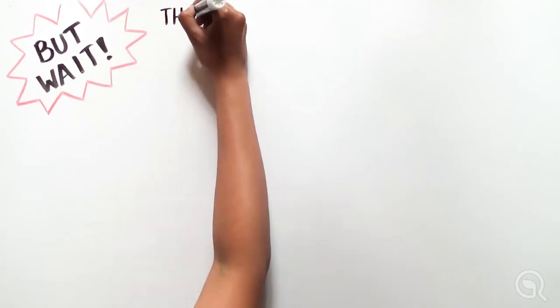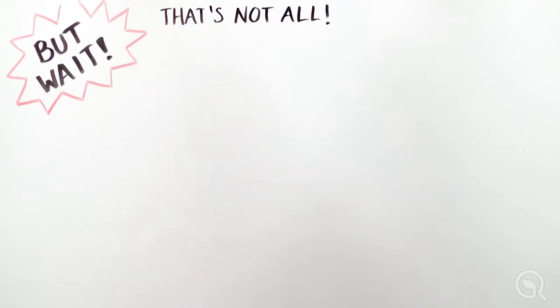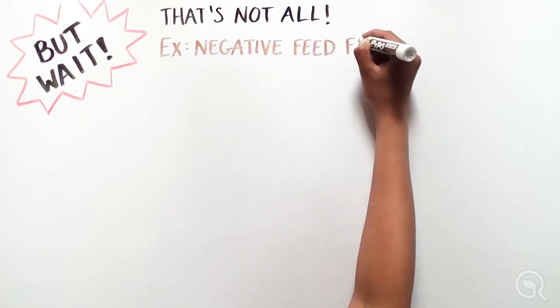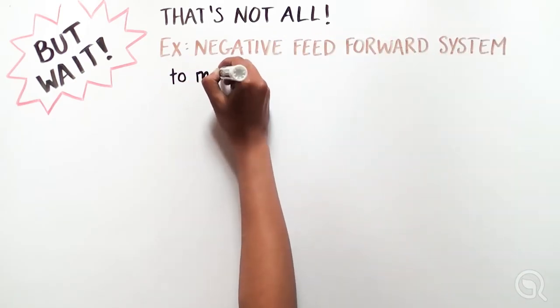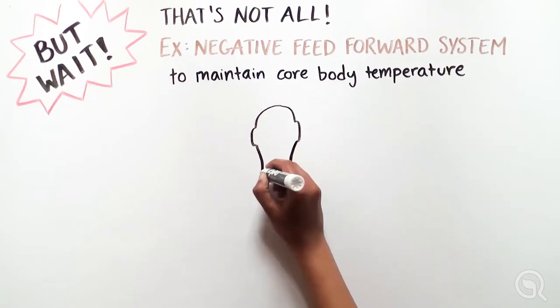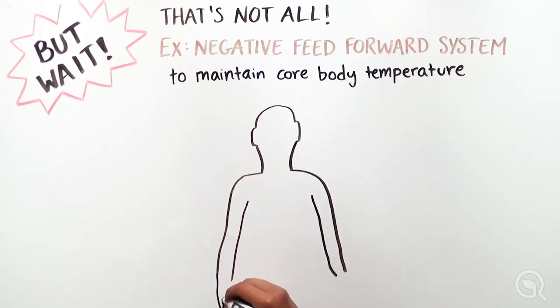But that's not all. Some forms of negative feedback can actually anticipate changes in a biological system, because simply turning certain biological processes on or off isn't enough to effectively maintain the set point. So our bodies have come up with a few additional clever tricks. For example, a negative feed-forward system. Here, the body is able to anticipate when a change is about to take place and make adjustments in advance to avoid large imbalances.